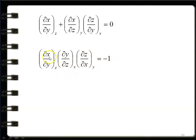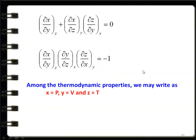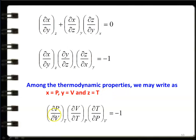Rearranging, we get: (∂x/∂y) at constant z · (∂y/∂z) at constant x · (∂z/∂x) at constant y = −1. The pattern: ∂x/∂y (third variable constant), ∂y/∂z (third variable constant), ∂z/∂x (third variable constant) equals −1. This is Theorem number 3. In terms of thermodynamic properties (x=p, y=v, z=t): (∂p/∂v) at constant T · (∂v/∂T) at constant P · (∂T/∂p) at constant V = −1.